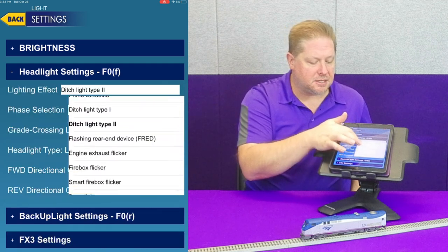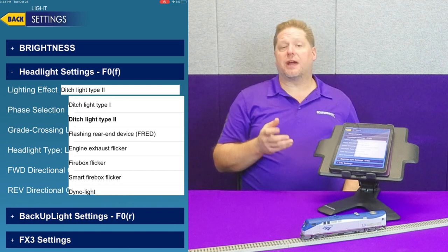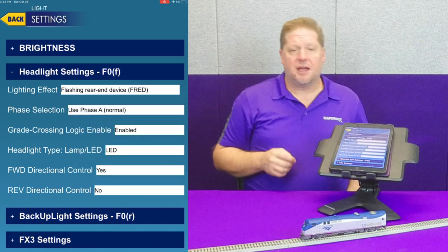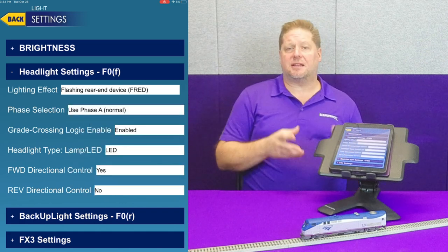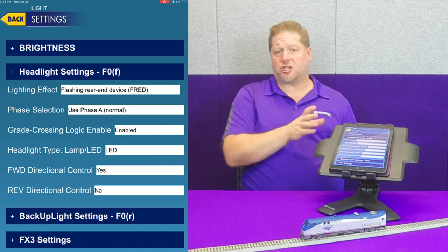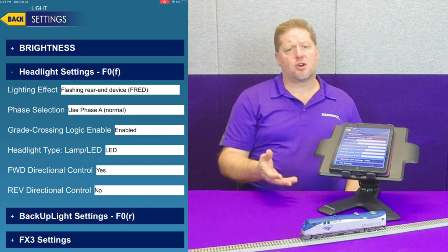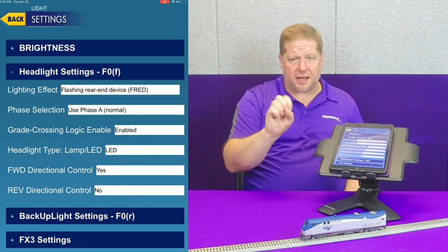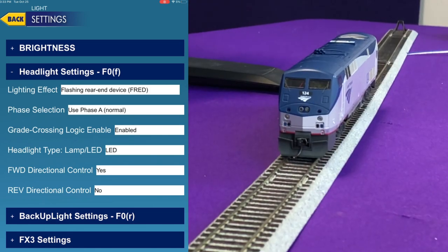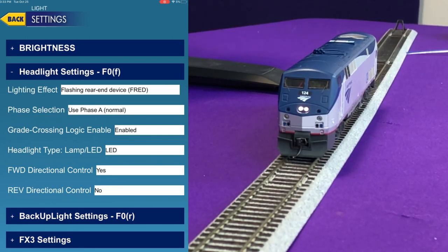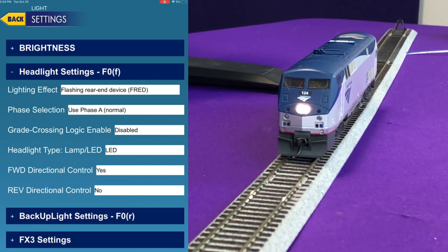Next on the list is the flashing rear end device, or FRED. This allows you to simulate the flashing light on a FRED at the end of a train. If you have a locomotive where you want to simulate a FRED, some of you may remember we've done a YouTube video where this lighting effect was used to simulate a blue flag signal located in the cab — check that video out in our YouTube history.